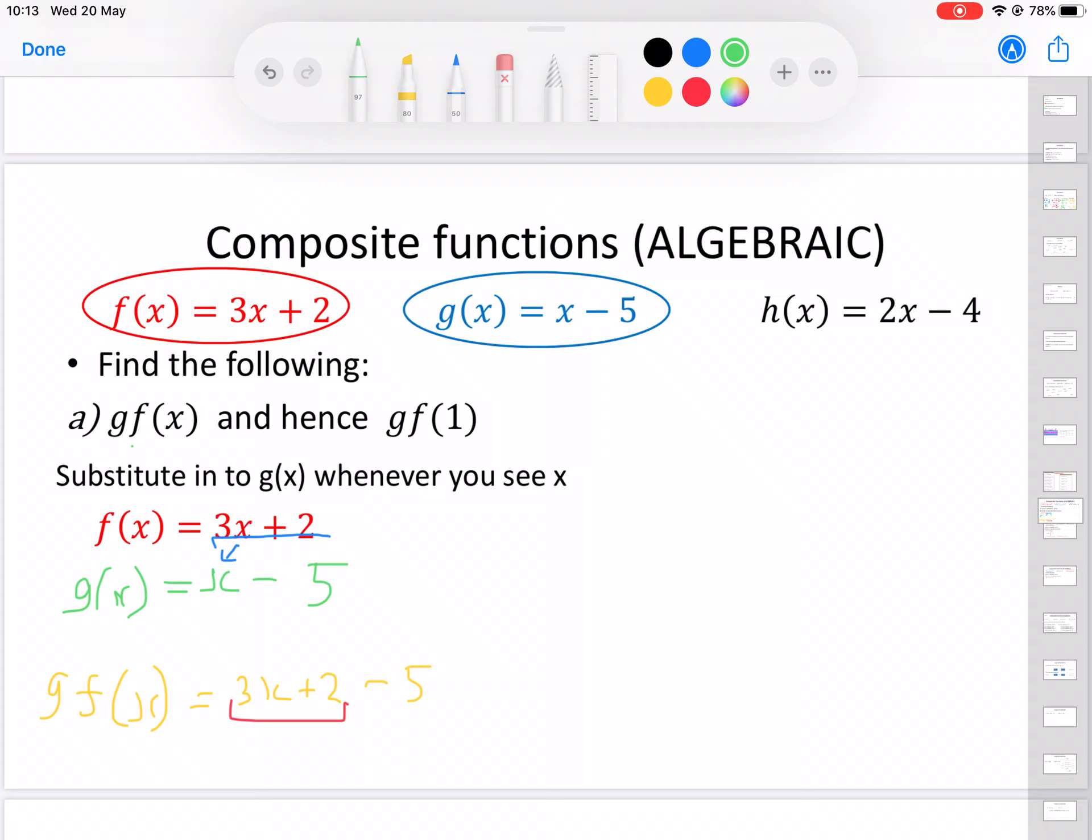Now we're just going to simplify that up a little bit. We've got 3x and then plus 2 minus 5, so that gives us minus 3. So gf(x) = 3x - 3. Done.